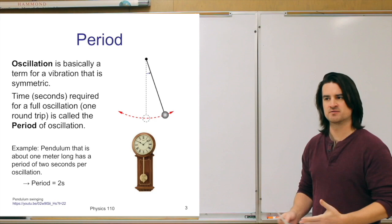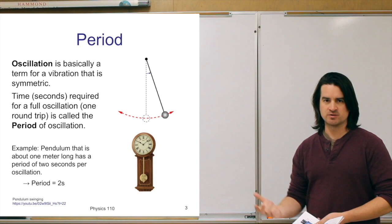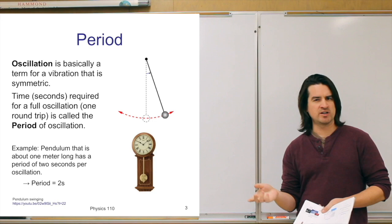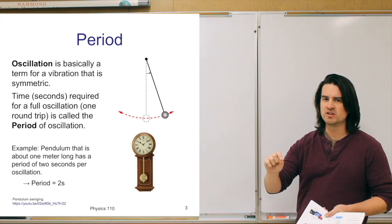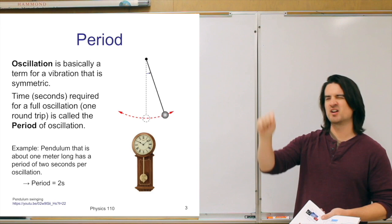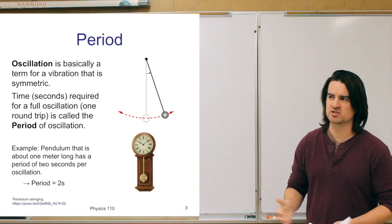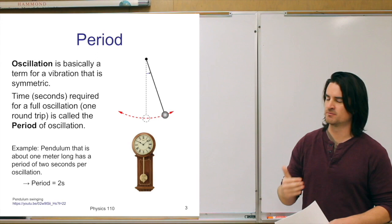Some basic properties of vibrations and also waves — because waves are just vibrations extended in space — include the concept of oscillation. An oscillation and a vibration are very similar things. For our purposes, an oscillation is essentially a vibration that is symmetric, meaning something moves the same amount up and down, or the same amount left as it does right. The term oscillation is used more often in physics when talking about physical phenomena.